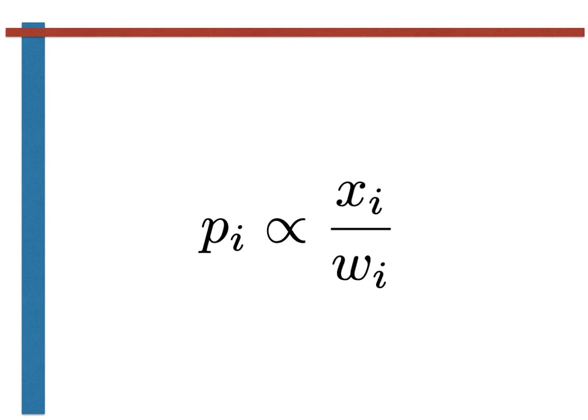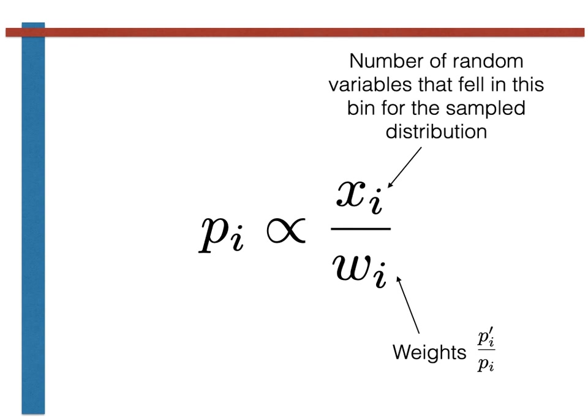To conclude then, we have derived the following results. In this expression the wi here is the ratio of pi prime, the sample distribution, to pi, the distribution of interest. The xi is the number of random variables that fell into the ith bin when we sampled the distribution p prime.